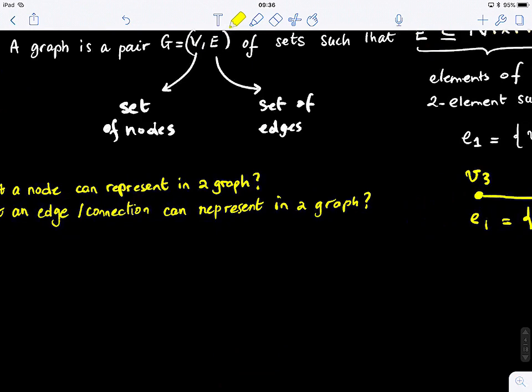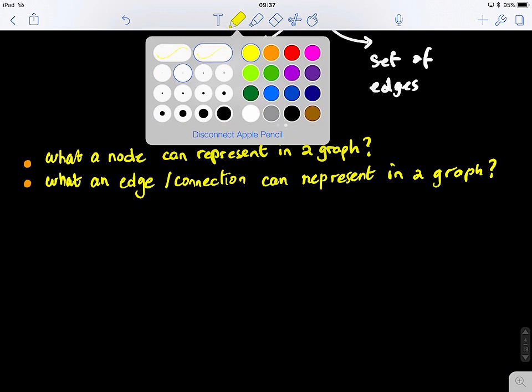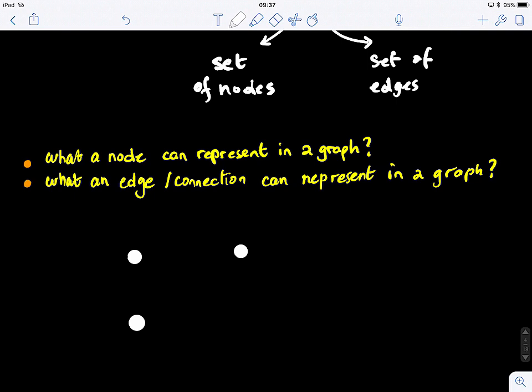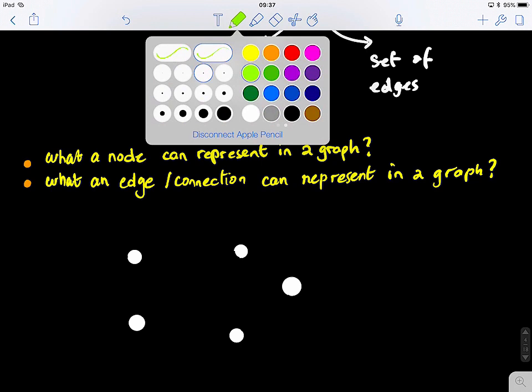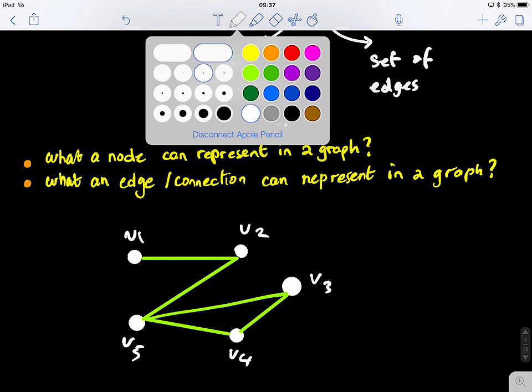Now let's come to this nice question. What can a node represent in a graph? And what can an edge or a connection possibly represent in a graph? Think in terms of the available data, the problems that you want to solve. Here I have this graph. What can this represent? How many nodes do I have in my graph? V1, 2, 3, 4 and 5. Now, what can a node represent in a graph? I want you to give me ideas.